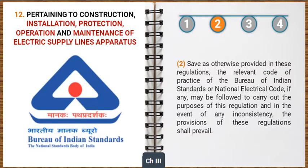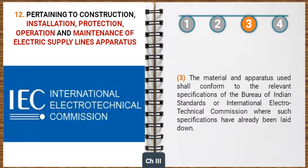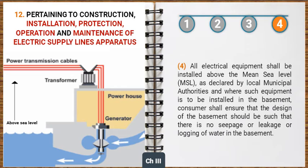Save as otherwise provided in these regulations, the relevant code of practice of the Bureau of Indian Standards or National Electrical Code, if any, may be followed. In the event of any inconsistency, the provisions of these regulations shall prevail. The material and apparatus used shall conform to the relevant specifications of the Bureau of Indian Standards or International Electrotechnical Commission. All electrical equipment shall be installed above the mean sea level (MSL) as declared by local municipal authorities, and where such equipment is to be installed in the basement, the consumer shall ensure that the design of the basement is such that there is no seepage or leakage or logging of water.